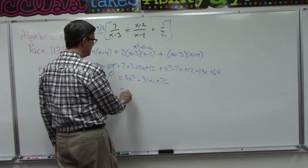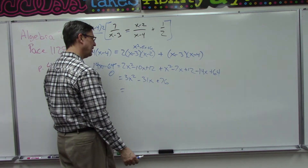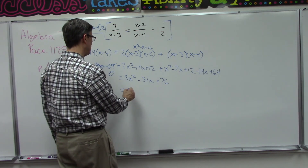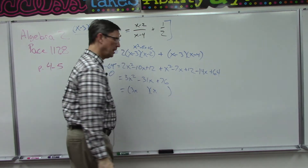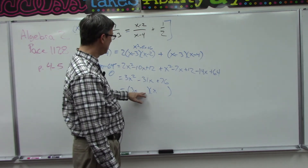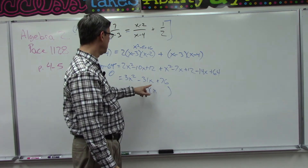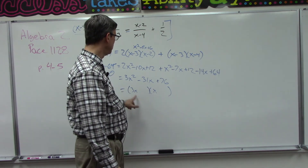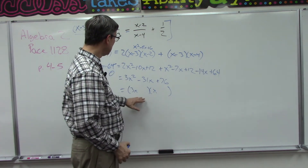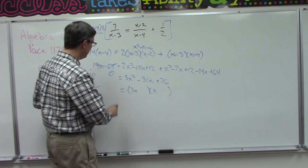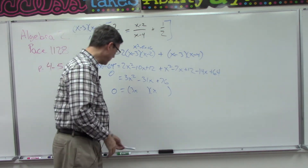Here's where the fun comes in: we first check if there's a common factor we can take out, but 76 is a... well we have to check. We set up 3x and x, and then here's where you start playing with numbers that multiply together to give you 76, and work with the 3 to come up with the negative 31 in the middle. Then since this equals zero, we set each factored term equal to zero and solve to find X.